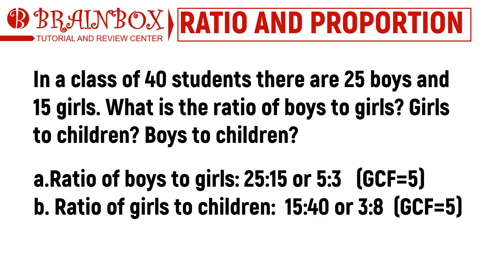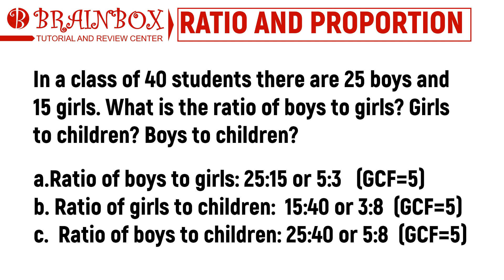Meanwhile, the second question asks for the ratio of girls to the total number of children in the class. Since there are 15 girls in a class of 40 students, the ratio is 15 to 40, or in lowest terms, 3 to 8. And for the ratio of boys to the total number of children, we can write it as 25 to 40, or 5 to 8.